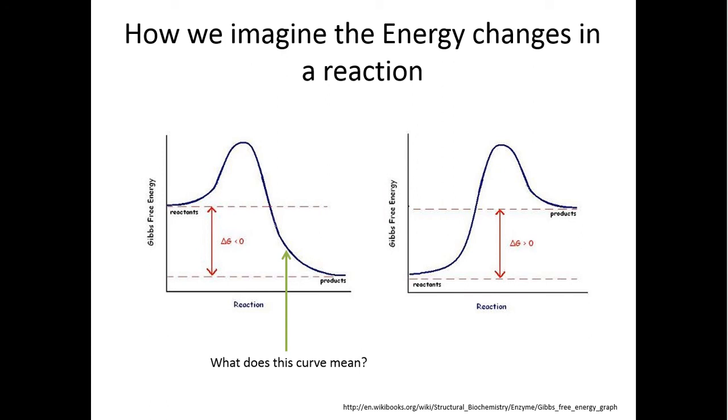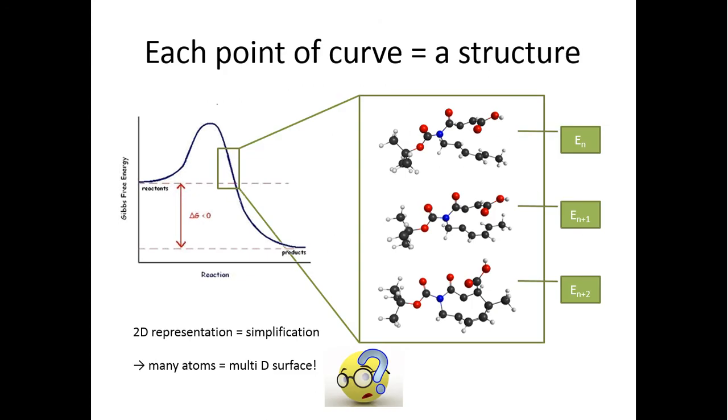What does every point on this curve mean? It has to correspond to something in reality, in real life. And so what is it? Actually every single point on this curve corresponds to a structure. If you have, let's say, an example of a control molecular reaction, I have a formation of like two rings.